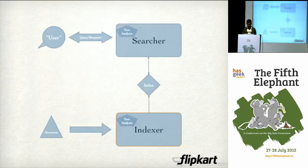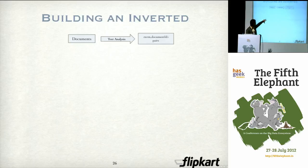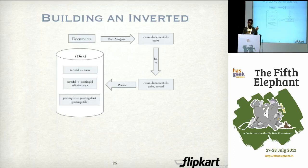Now let us talk about the indexer and how we do the indexing. We take documents, run them through the text analysis we already talked about, which results in term-document ID pairs. After tokenization and everything, we sort these, which results in sorted term-document ID pairs, and then we persist them. The key thing is we persist them in three ways: every term is assigned a term ID; we store a mapping from term ID to a posting ID — this is the dictionary; and then we have a posting file which stores the posting ID to the list of document IDs — the posting list. The only problem is the sort — it is a killer.